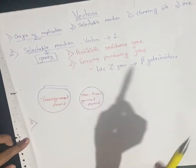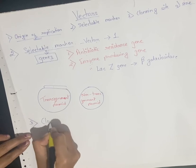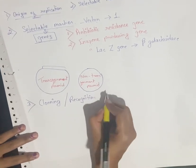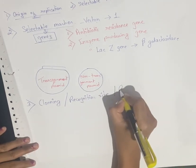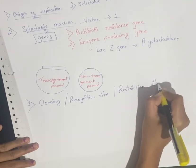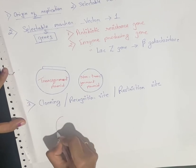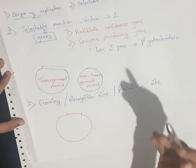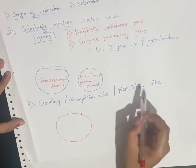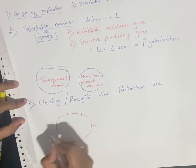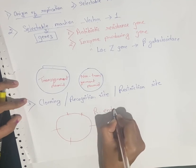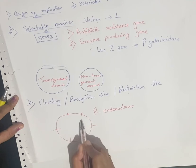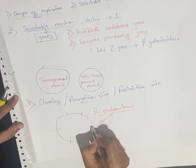The third feature of a vector is the cloning site, also called the recognition site or restriction site. A plasmid should have very few restriction sites — not more than two or three. If there are three or four restriction sites in a plasmid, the restriction endonuclease enzyme will cut the plasmid at multiple locations.